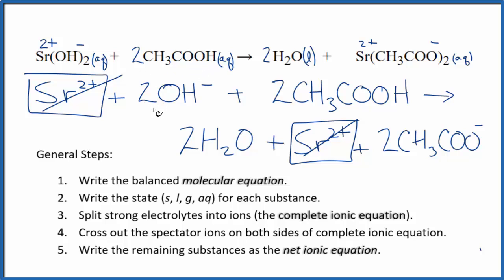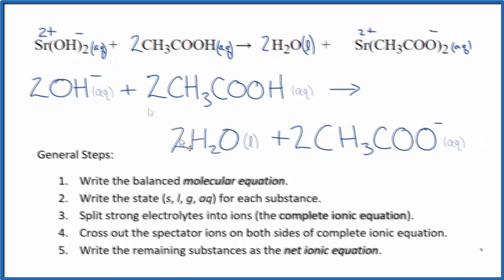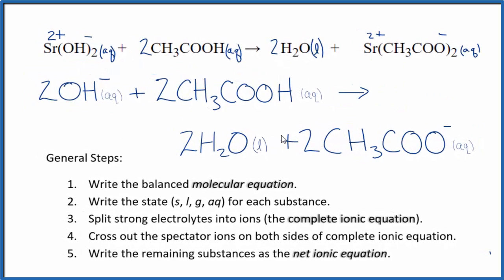Let me clean it up and write the states. We'll have our net ionic equation. So this is the balanced net ionic equation for Sr(OH)2 plus CH3COOH. You'll note that we have 2 in front of each one of these substances. So we can reduce that down to 1.